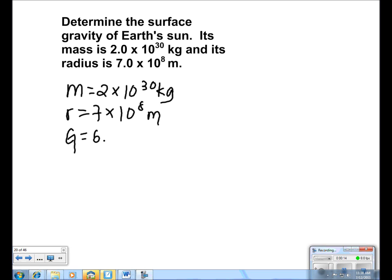We are given that G is 6.67 times 10 to the negative 11 newtons times meters squared per kilogram squared.